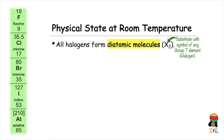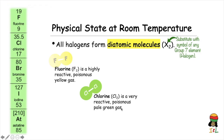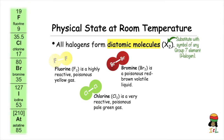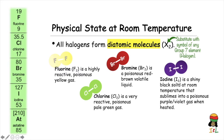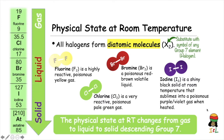Fluorine is a highly reactive poisonous yellow gas with chemical formula F2. Chlorine has chemical formula Cl2 and it's a very reactive poisonous pale green gas. Bromine is a poisonous red-brown volatile liquid with chemical formula Br2. Iodine has chemical formula I2 and is a shiny black solid at room temperature that sublimes into a poisonous purple gas when heated. Therefore, the physical state at room temperature changes from gas to liquid to solid descending Group 7. RT represents room temperature.